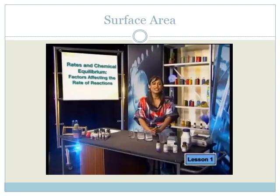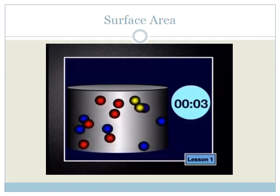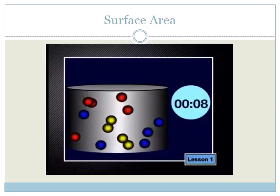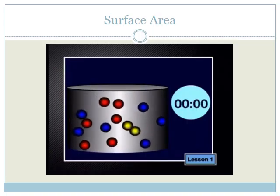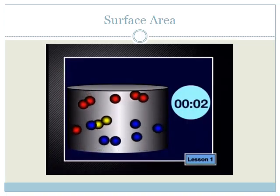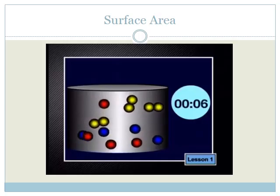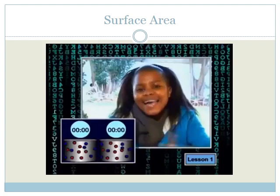Chemists use collision theory to explain why there is a difference in reaction rates for different reactions. When a small number of collisions takes place in a certain time, few product particles form and we say the rate of reaction is low. When lots of collisions take place in a certain time, more particles of the product form and we say the reaction rate is high.